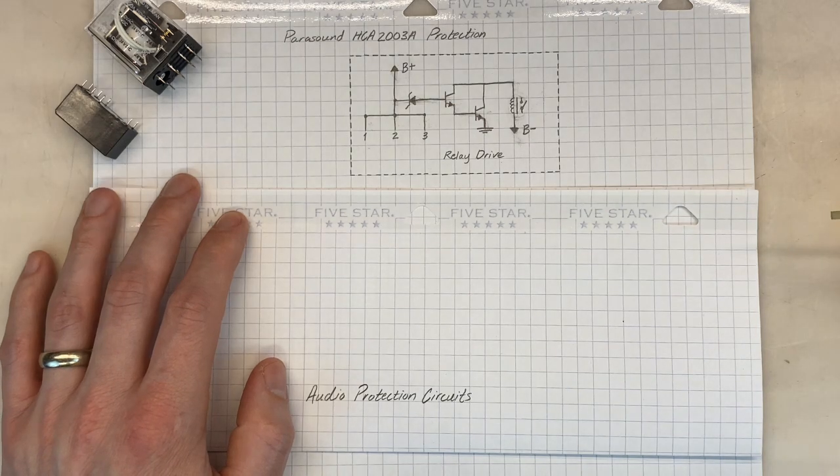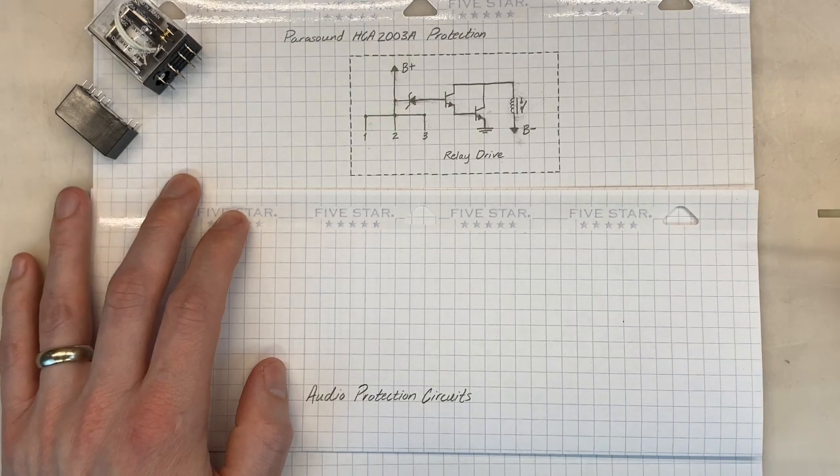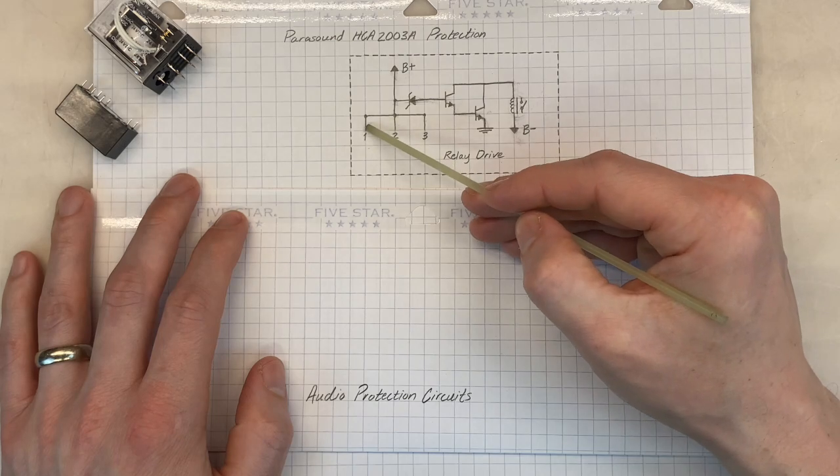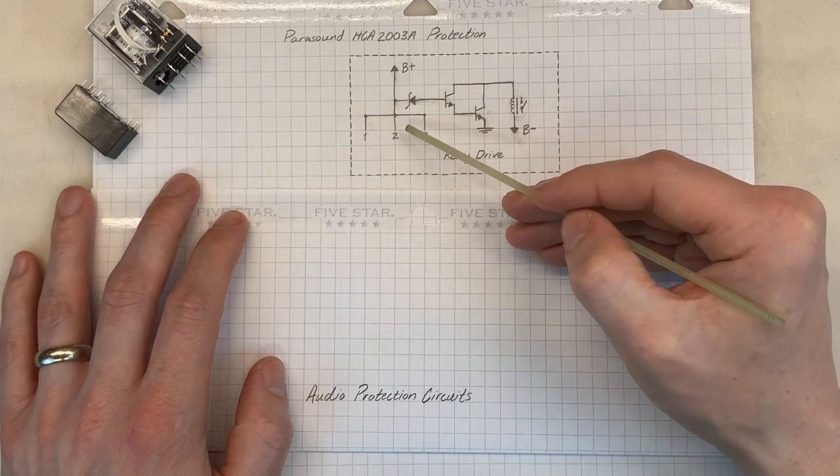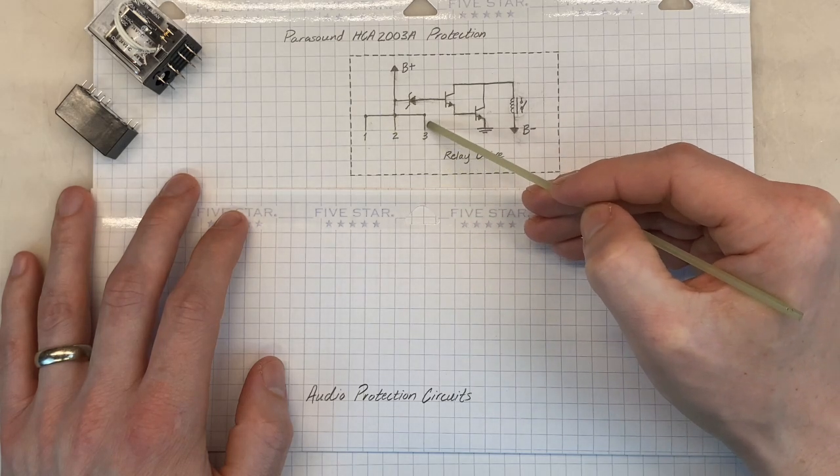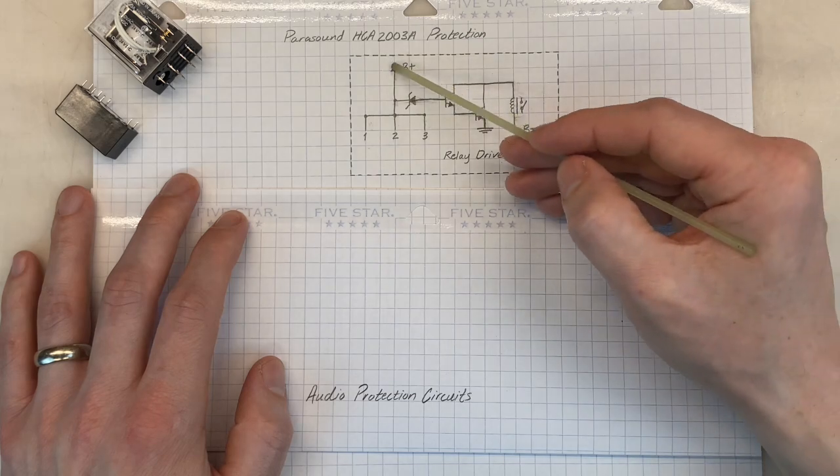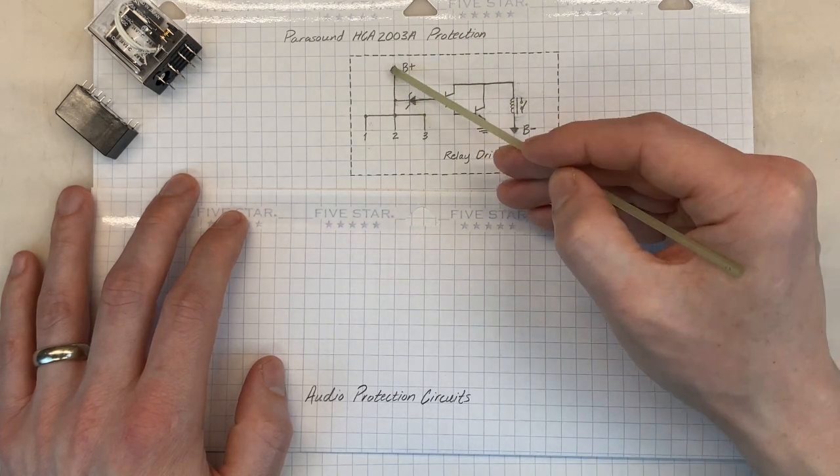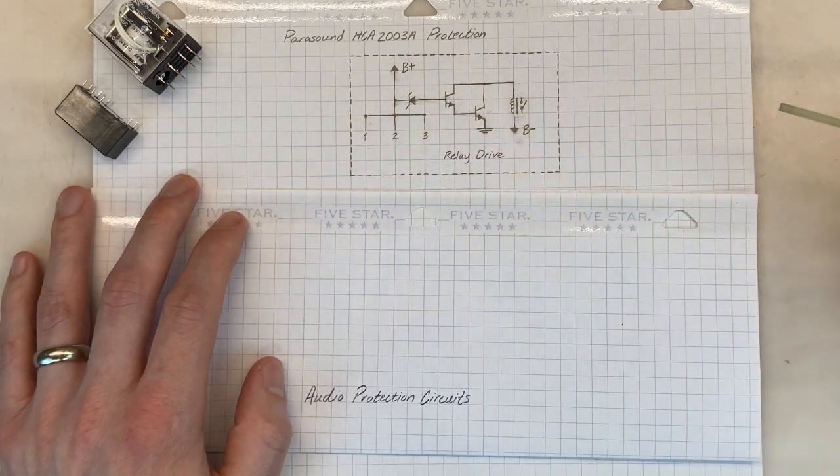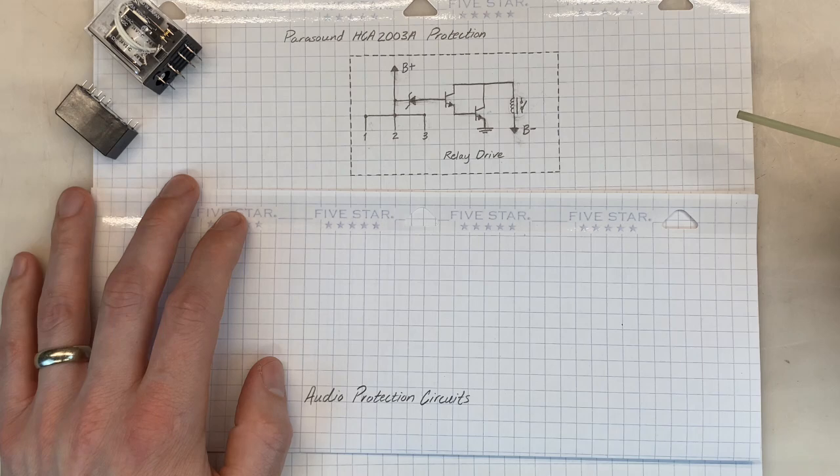That's under normal operating conditions. So what can prevent that? Well, if any one of these sub-protection circuits, that's what these nodes are, is engaged or enabled, the B-plus will bypass our relay drive circuit, and it will flow through that enabled sub-circuit. So let's take a look at those sub-circuits.